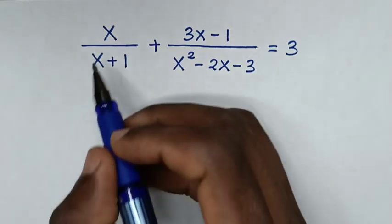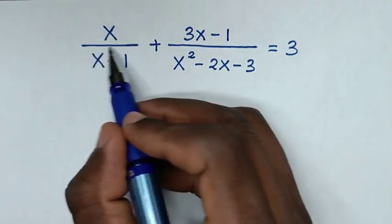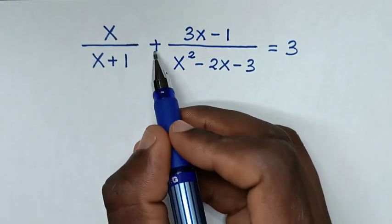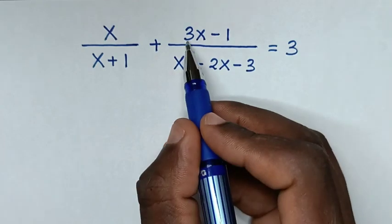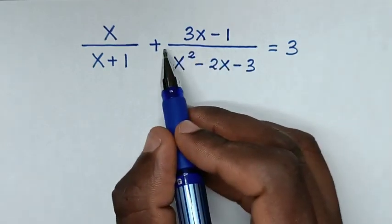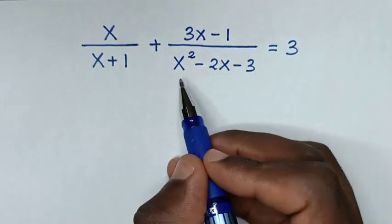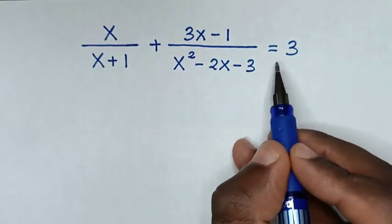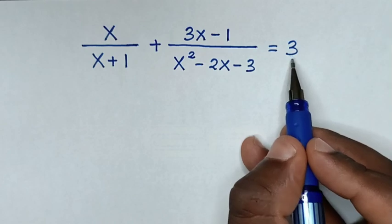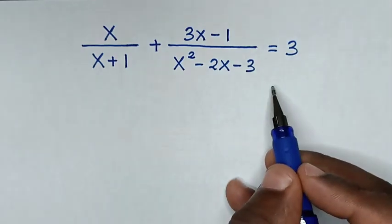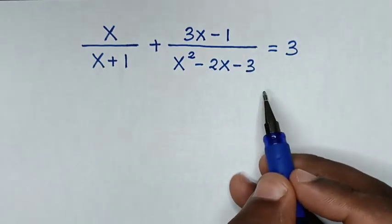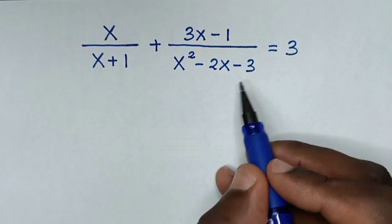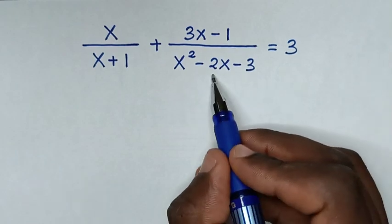Hello. How to solve x over (x plus 1) plus (3x minus 1) over (x squared minus 2x minus 3) is equal to 3. To find the value of x from this equation, first we factorize this quadratic expression x squared minus 2x minus 3.